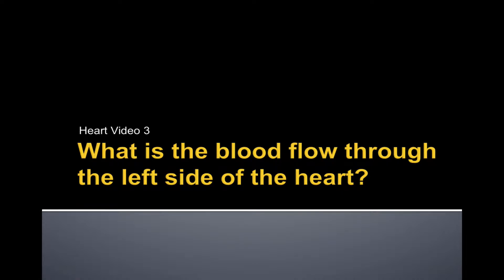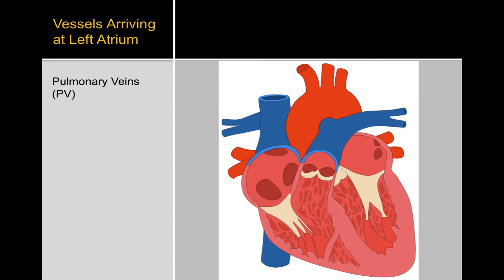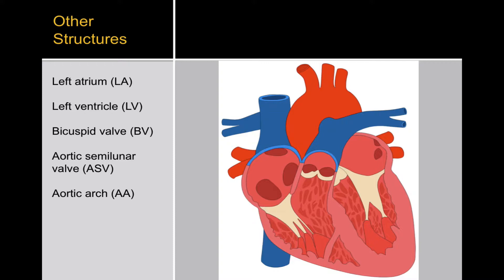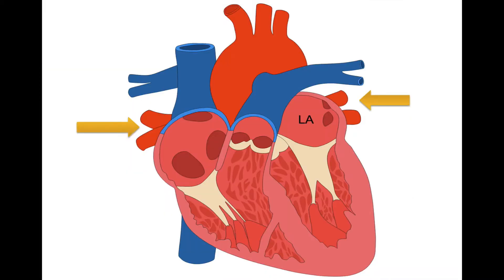Let's answer the question on the screen: what is the blood flow through the left side of the heart? We have vessels arriving at the left atrium — those are pulmonary veins, two on the left and two on the right. The key structures and abbreviations are: left atrium (LA), left ventricle (LV), bicuspid valve (BV) also known as the mitral valve, aortic semilunar valve (ASV), and aortic arch (AA).